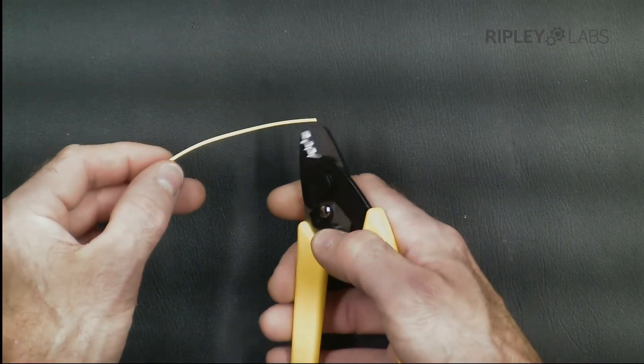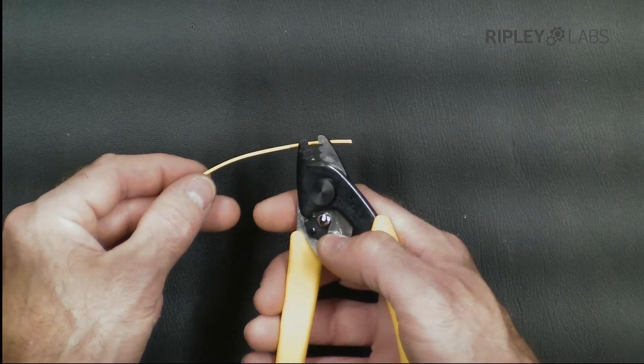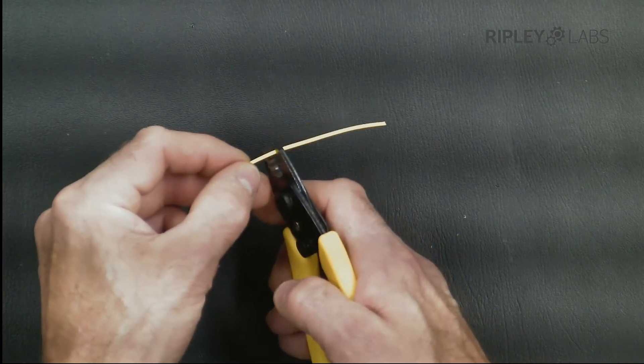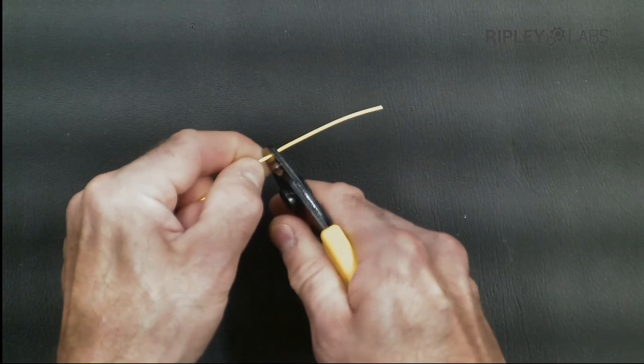To use the Miller CFS-3, load the fiber jacket into the first hole and squeeze to cut the jacket. Release the stripper and gently remove the jacket by hand.